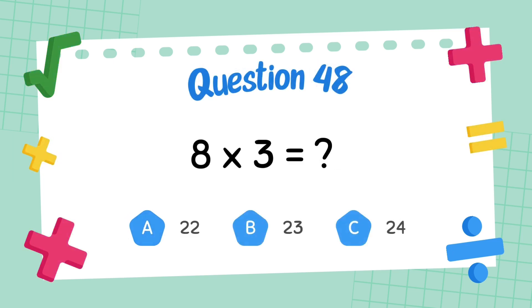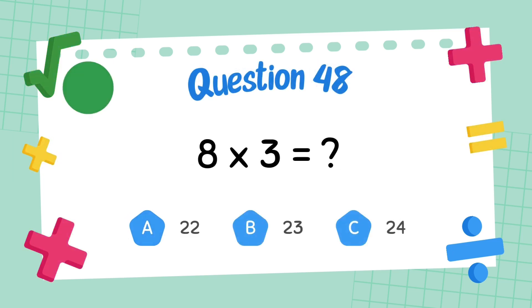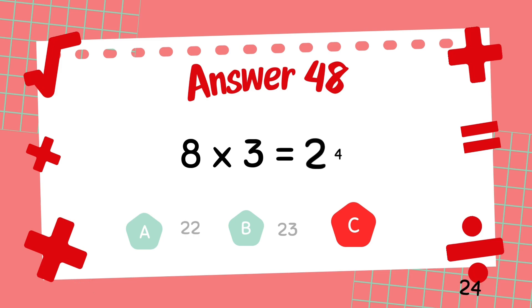What does 8 multiply 3? The answer is 24.